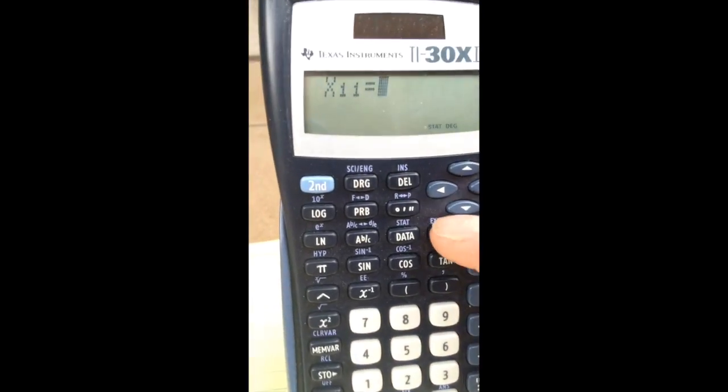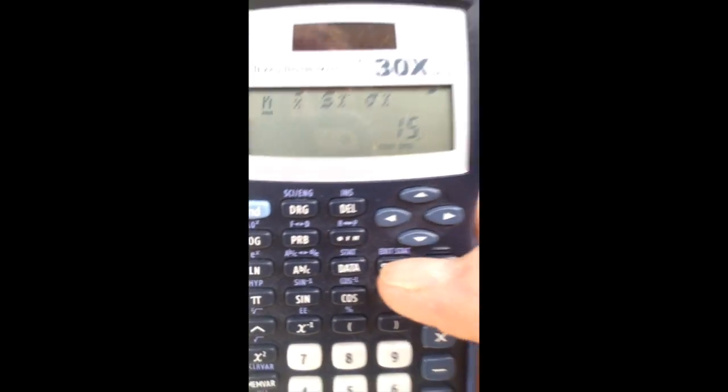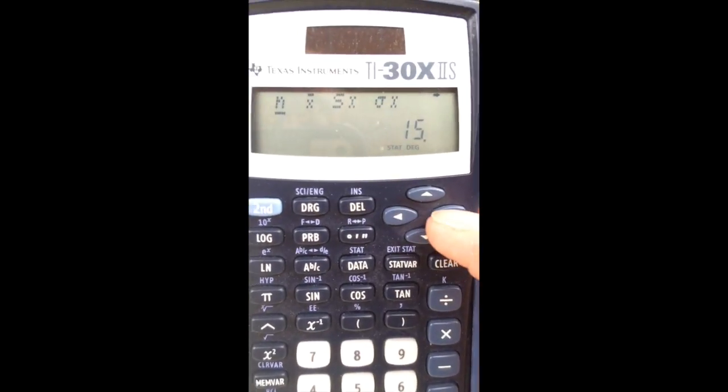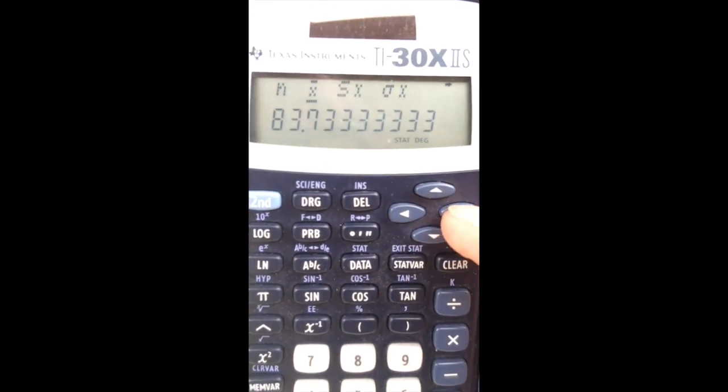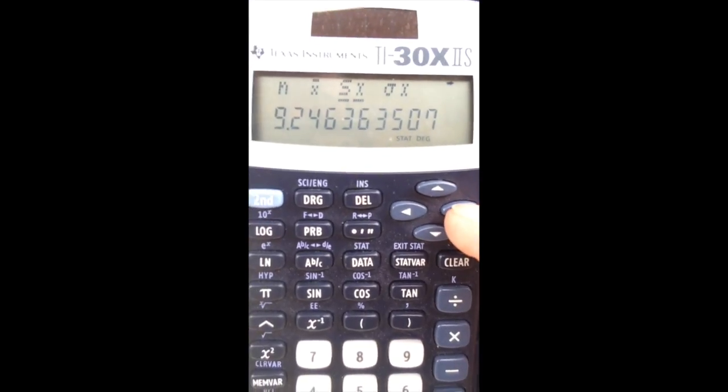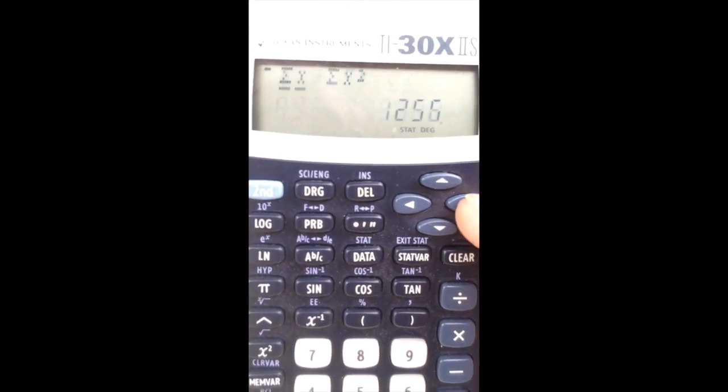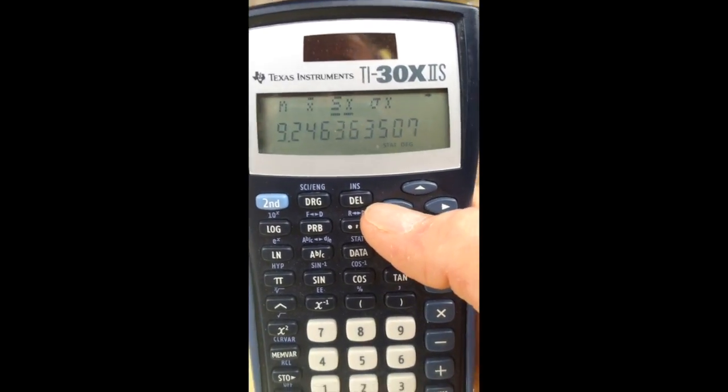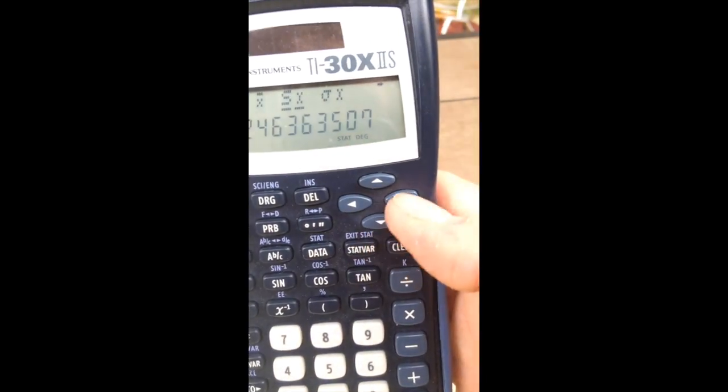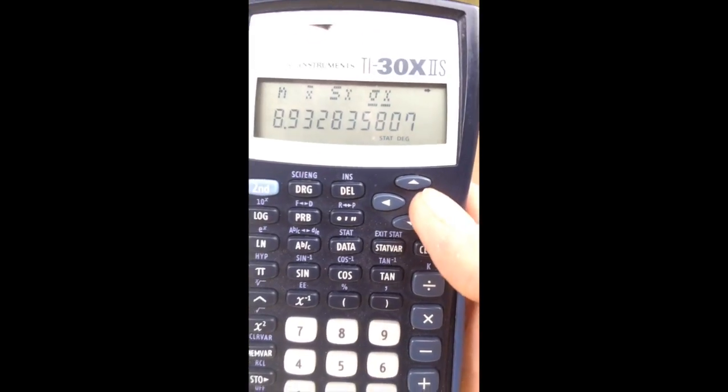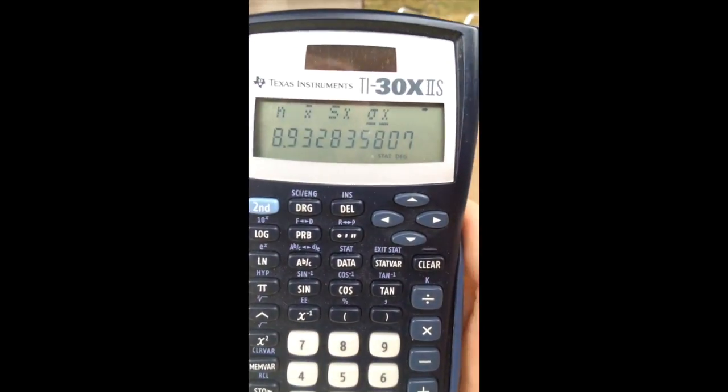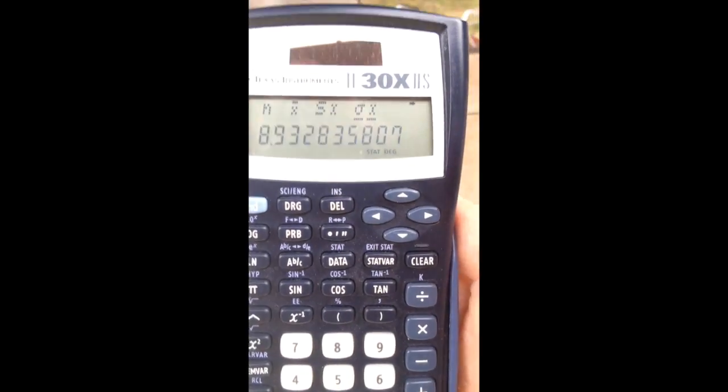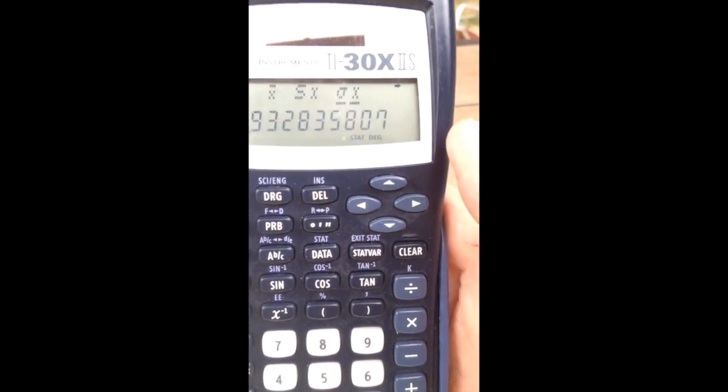And then, once again, I hit stat var. Now, notice I had 15 numbers. Remember, I changed those frequencies. So I have 15 numbers. There's the mean, 83.7, the standard deviation of the sample and of the population. Also, notice that the sample standard deviation is larger than the population standard deviation. Remember, we divide the sample standard deviation by n minus 1. And so that makes the sample a little larger.